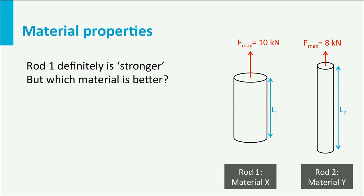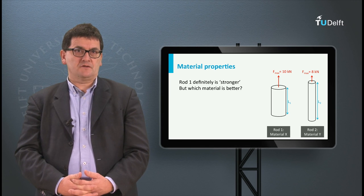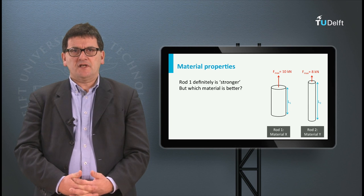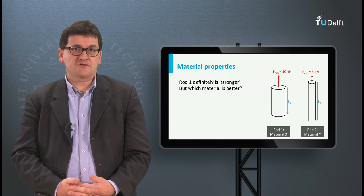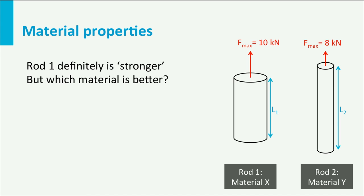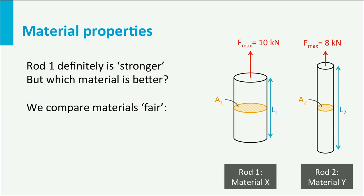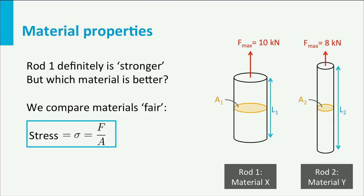Let's look at two rods of different materials X and Y. If you look at the maximum load, rod 1 is stronger. But is material X also a stronger material than material Y? To answer this question we need to make a fair comparison. Rod 1 has a larger cross-section A than rod 2, meaning there is more material to carry the load. A good measure is to divide the load by the cross-sectional area, giving us the so-called stress of the material. The stress is the force divided by the cross-sectional area.